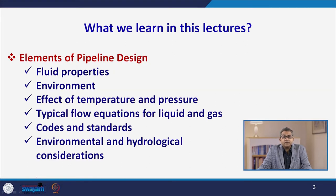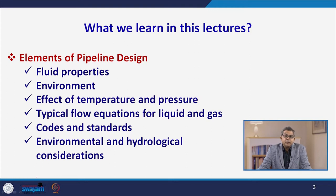In this particular chapter, which is attributed to pipeline design, we will discuss about various elements of pipeline design including fluid properties, various environments, and the effect of temperature and pressure on pipeline design. Apart from this, we will discuss about typical flow equations for liquid and gas, a brief idea about the relevant codes and standards, and environmental and hydrological considerations.